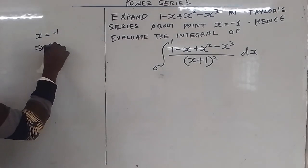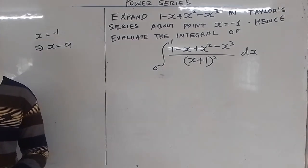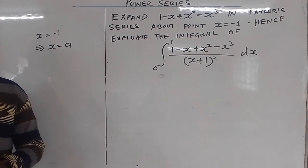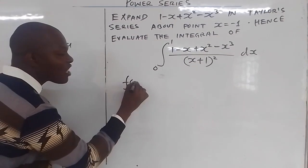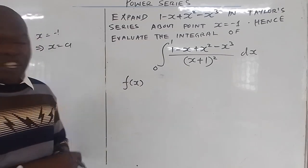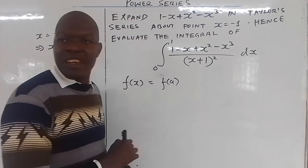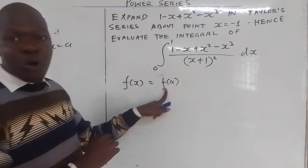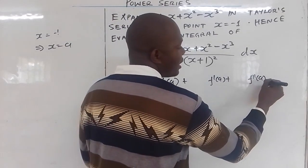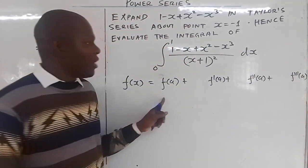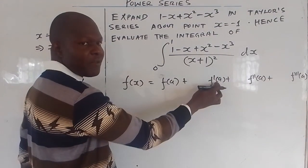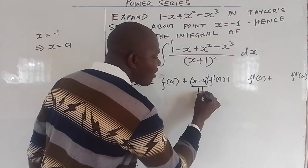They are telling you that the point is where x equals a. So when you are expanding a Taylor series at the point x equals a, you put the value of a, which is negative 1. The Taylor series expansion of f of x starts from f of a, then plus f prime of a, then plus f double prime of a, then plus f triple prime of a. Those four terms are enough.